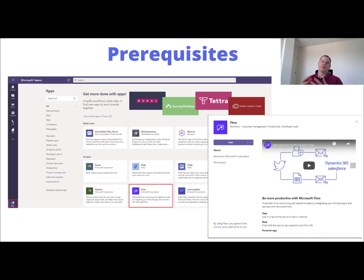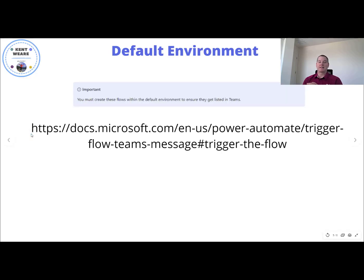As a reminder, there are a couple of prerequisites that we need to address. Number one is obviously you need Teams, and it's always recommended to get the latest version. In addition, you also need the Microsoft Power Automate app, or what's listed here as Flow. Lastly, as another prerequisite, do create your flows in the default environment, otherwise they will not be discoverable.